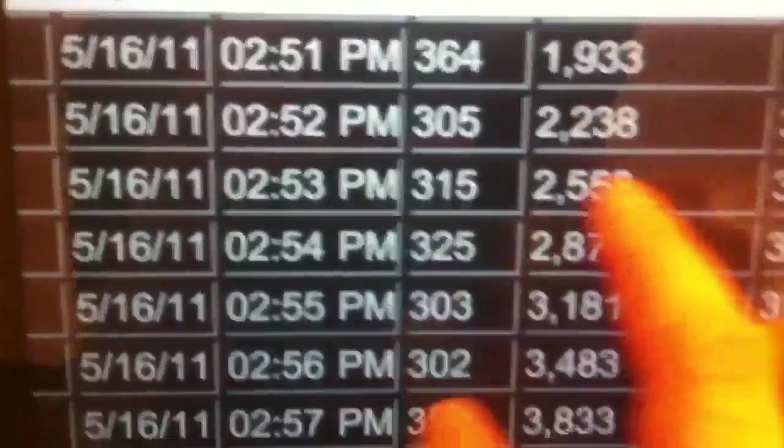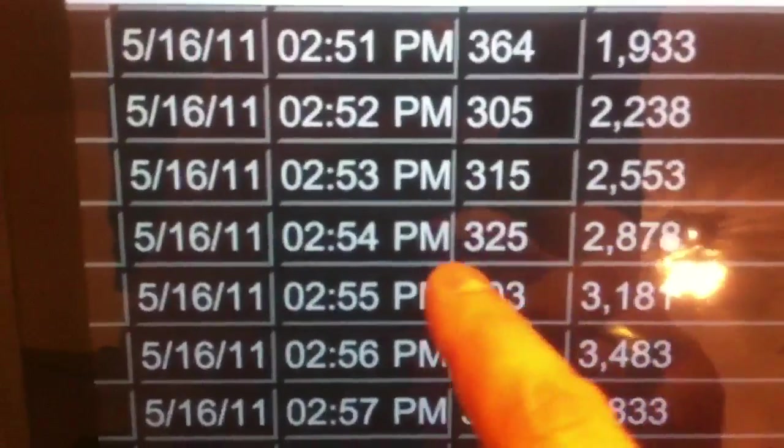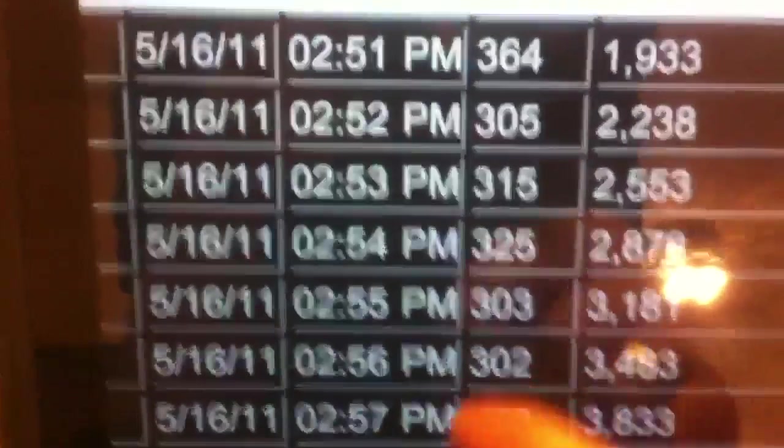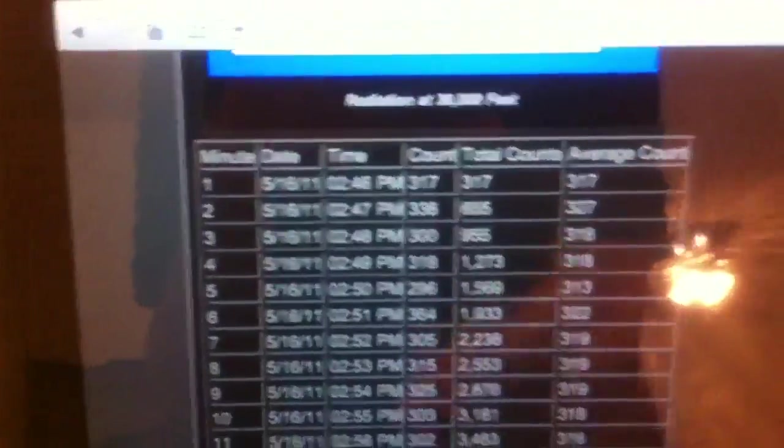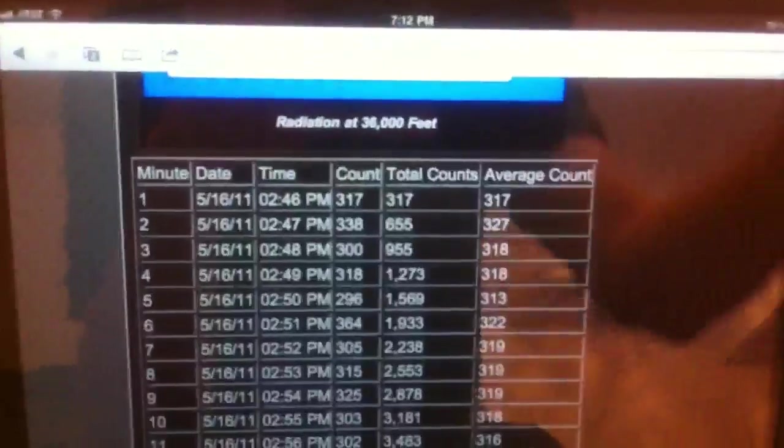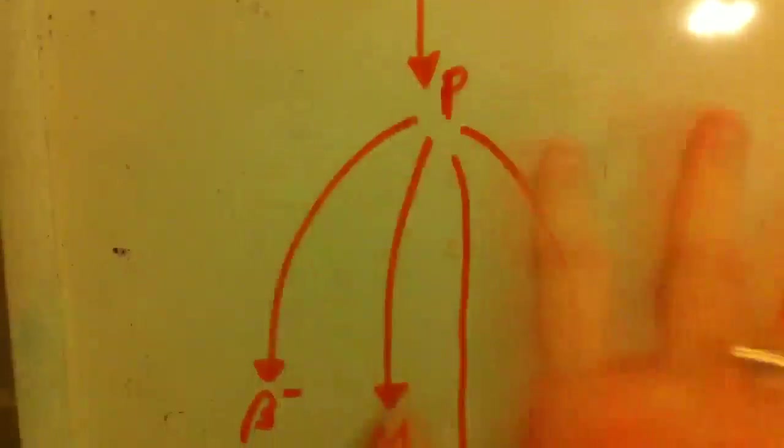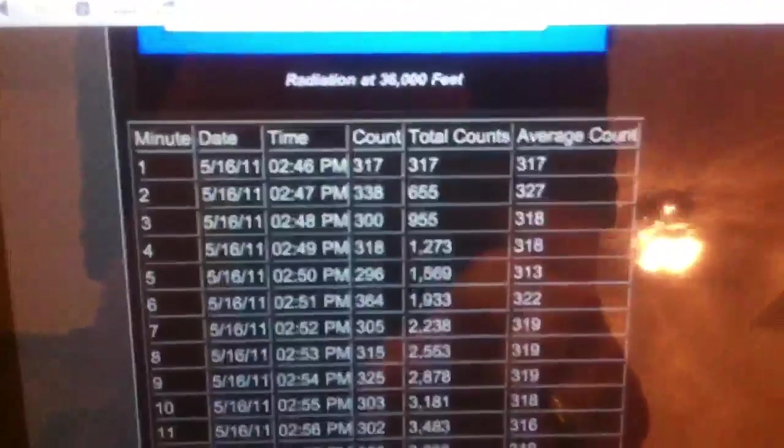Anyway, getting out of the bottom of my video here. I was picking up counts of 350 counts per minute. See? Look at that. 315 counts, 325 counts, 303 counts, 302, 350. Perfectly normal because I was at an altitude of 36,000 feet. The higher up you go, the more of the stuff there is. See? Yay!